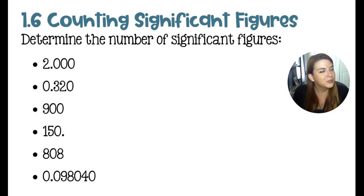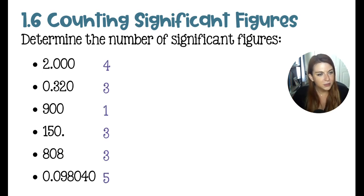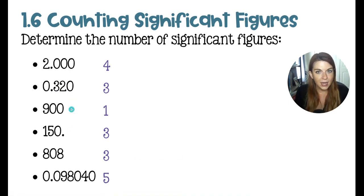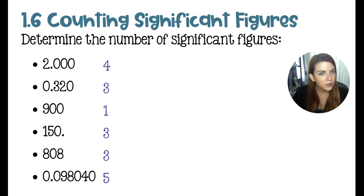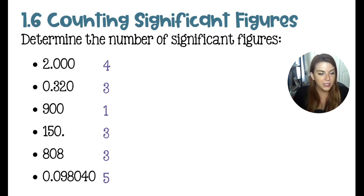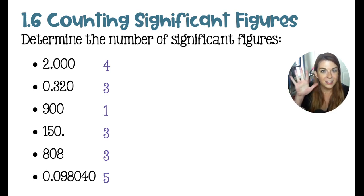Counting significant figures — remember to use the Pacific and Atlantic rule. 2.000 has four significant figures; all trailing zeros count because there's a decimal. In 0.320 we have three sig figs — the leading zero does not count, but the trailing zero does. 900 without a decimal: come in from the Atlantic side and skip those two zeros, leaving only the 9 — one sig fig. 150 with a decimal: all three count, giving three sig figs. 808 has a sandwiched zero — sandwich zeros always count — so three significant figures. Finally, a combination of all four rules: the decimal is present, come in from the left, skip the first two zeros, then count 9, 8, 0, 4, 0 — five significant figures.